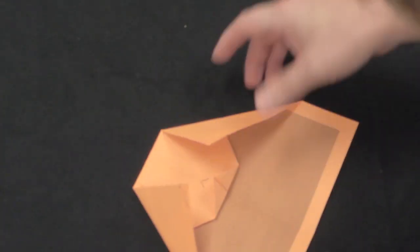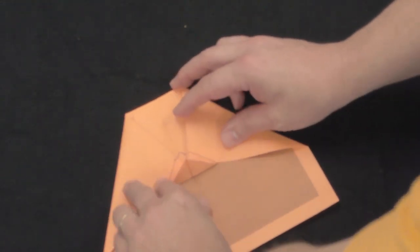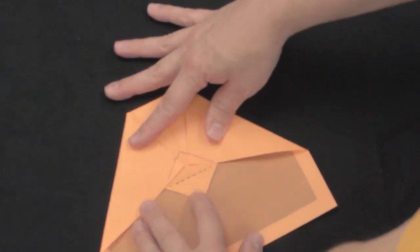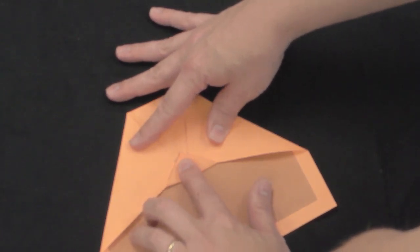From here, what I'm going to do is I'm going to take this little corner piece and fold it right up. Just like that. And that's going to help to lock in the paper.